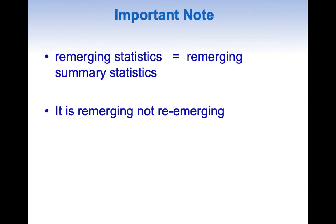Before finishing, I'd like to give two important notes. First, whenever I use the word re-merging statistics, that means re-merging summary statistics. Second, if I have mistakenly used the word re-emerging anywhere, it is not re-emerging — it is re-merging. That's all for this topic. If you liked it, please give it a thumbs up, share, and subscribe. Thank you.